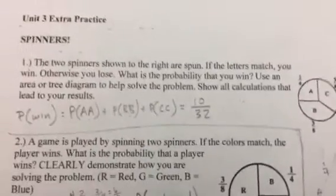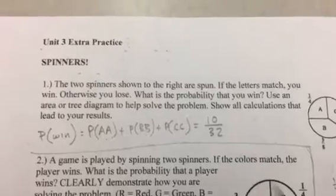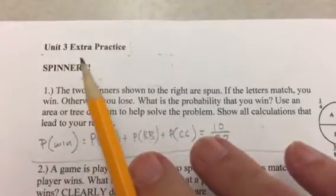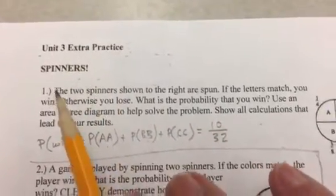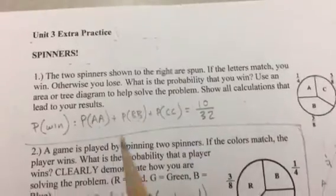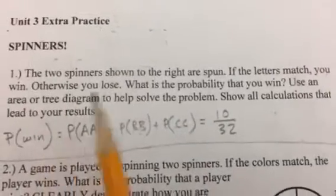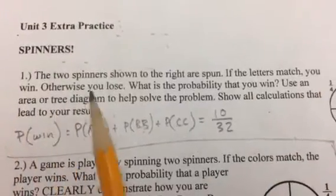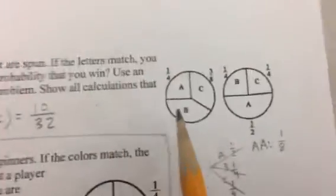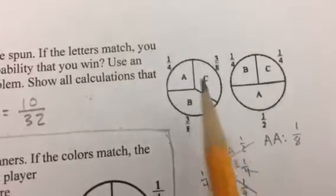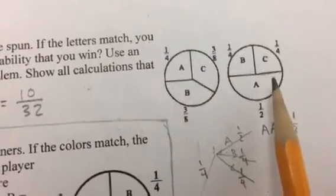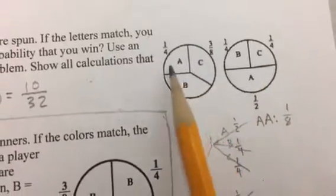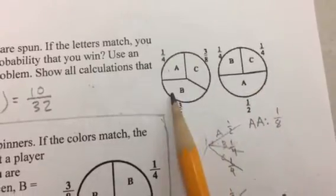Alright guys, thanks for watching. This will be just a rundown of this Unit 3 pre-test extra practice pages, front and back. Here's the first problem: these two spinners shown at the right are spun. If the letters match you win, otherwise you lose. The spinners have A, B, and C on them, and you can see the probabilities are marked there.